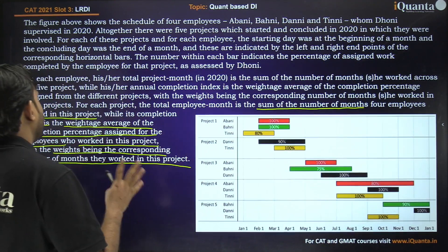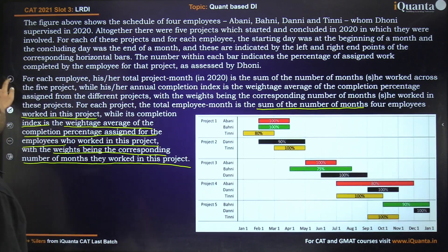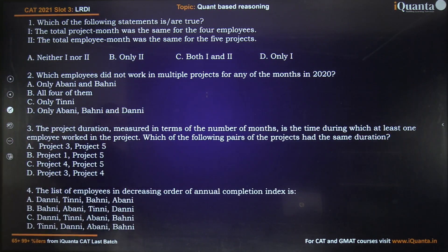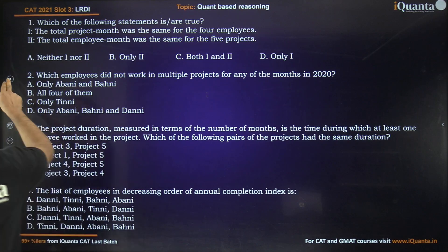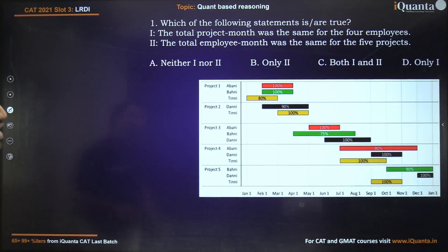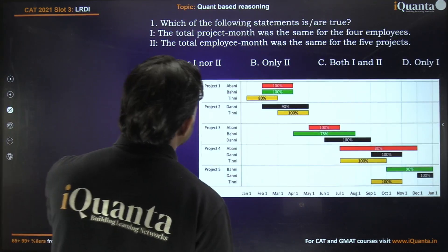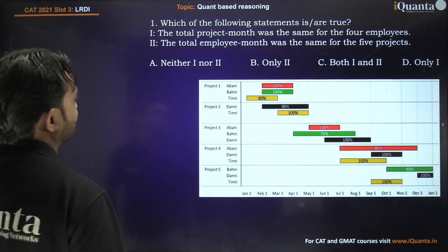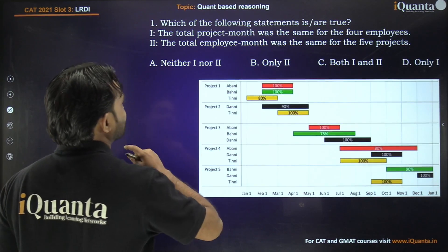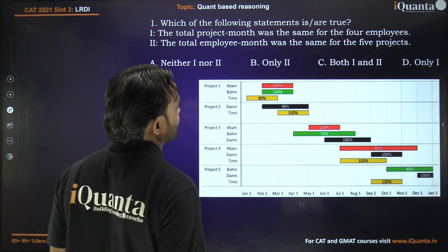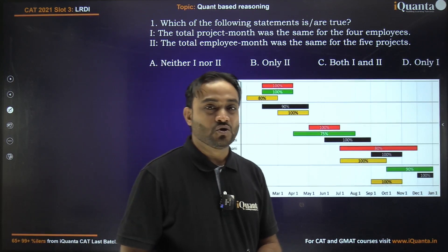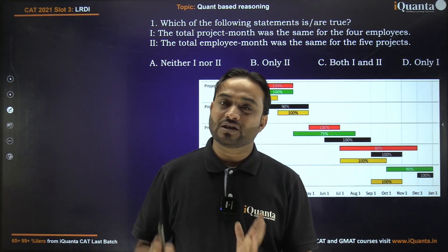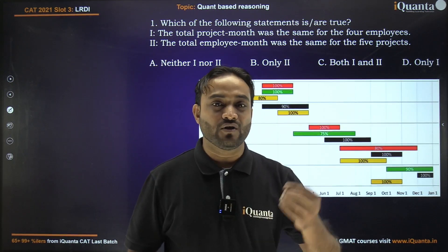So this is the question and this is the information given. These are the questions — you can take your time, pause the screen, and then we can discuss. Now, time for the first question. It says: which of the following statements is true? The total project month was the same for the four employees. What do we know about project months? It's the sum of all the months that any employee worked on a project.